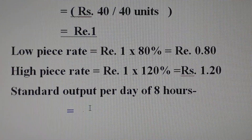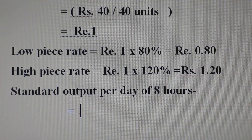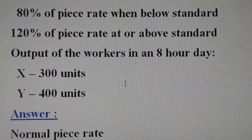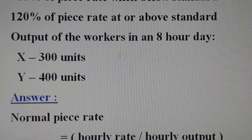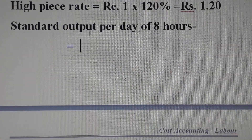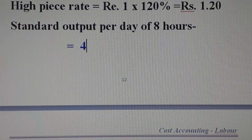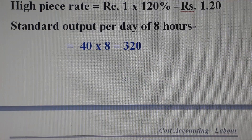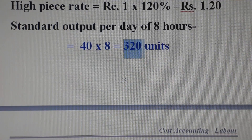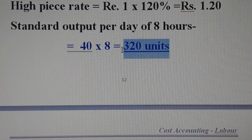The standard output per day for an 8-hour day is calculated. At 40 units per hour for 8 hours, the standard output per day is 320 units. If a worker produces 300 units, that is below the standard of 320 units.